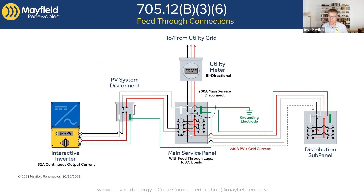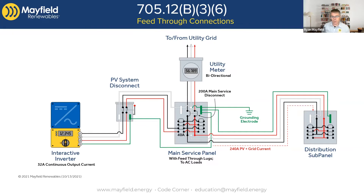Looking at the image, we have our main panel in the middle. There's a PV system coming in and making a connection on a 40-amp breaker, and then there are feed-through lugs that go downstream to an MLO — main lug only — panel that is distributing most of the loads in the house. We have to be aware that when we make this connection using this 40-amp breaker, we now have two sources of power on that feeder going downstream to the distribution sub-panel.